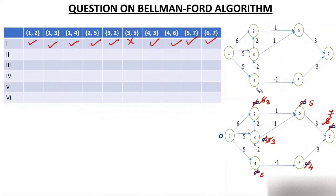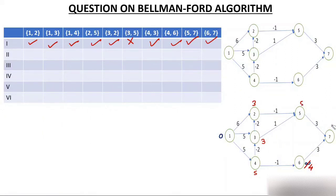After the first pass, the weights are: node 2 = 3, node 3 = 3, node 4 = 5, node 5 = 5, node 6 = 4, node 7 = 7. Now I will apply the same concept in the second pass.